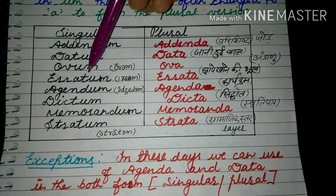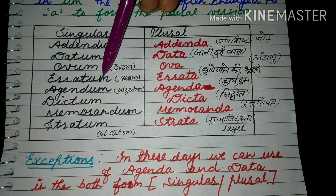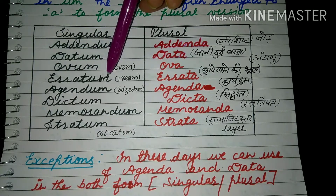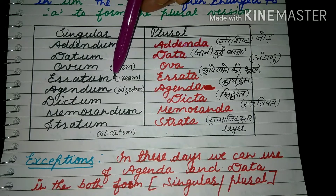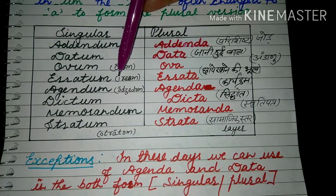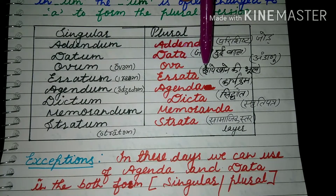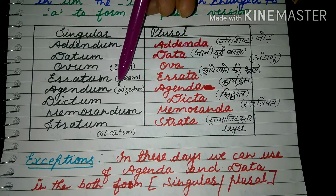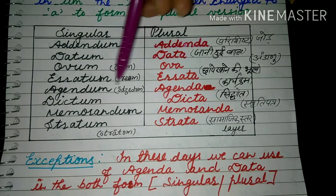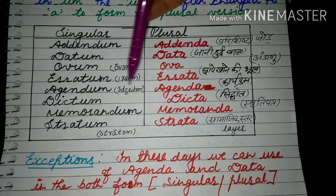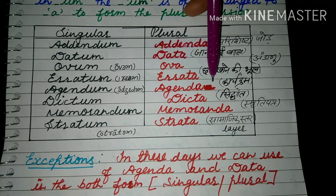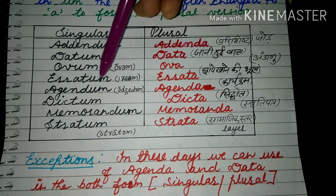Another example is 'erratum' — meaning a printing mistake, an error made during printing — its plural is 'errata'. Another word is 'agendum', meaning the program or schedule of any event — its plural is 'agenda'.